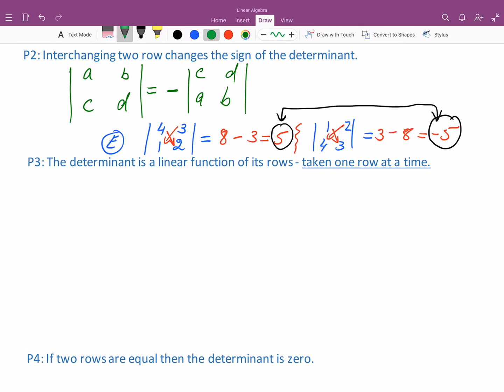Now this third property is really crucial and it's kind of difficult to understand at first. The determinant is a linear function of its rows taken one at a time. Now linearity has two sub-properties. One is that if you multiply by a number, then you could just take the function and then multiply by the same number. So you can reverse that process.